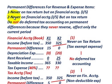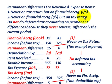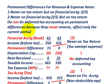Case two is where the permanent difference — either a revenue or expense item — would never be recorded in our financial accounting or income statement, but it would be recorded for our taxes or on our tax return. When you're dealing with these permanent differences, you do not do deferred tax accounting on any permanent difference, because they never reverse. They affect only the current period. Deferred tax accounting refers to deferred tax liabilities or deferred tax assets.